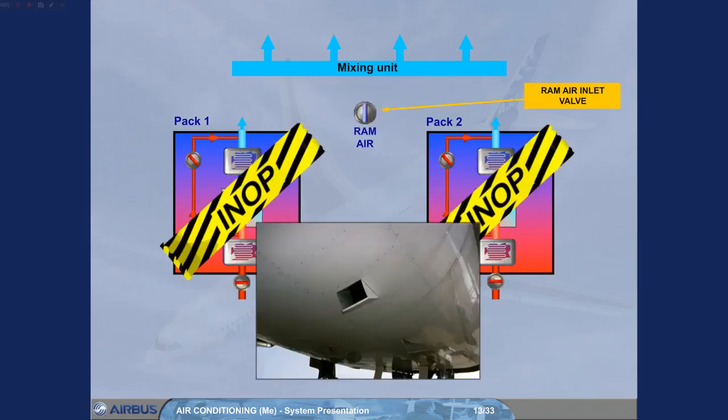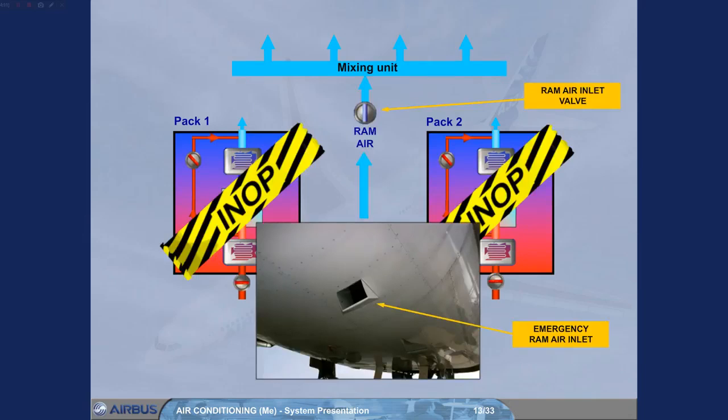In case of failure of both packs, an emergency air supply is provided via a ram air valve to ventilate the cockpit and the cabin or to remove smoke.